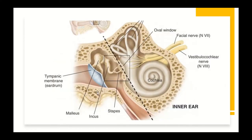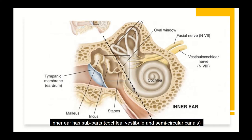After the middle ear cavity, we come to the third part of the ear — the inner ear. Looking at the coronal section through the skull, we can see the external ear, tympanic membrane, ossicles, and the stapes connected to the inner ear. The inner ear comprises two subparts: the cochlea, a coiled structure whose main function is hearing, and the vestibular part, concerned with balance.